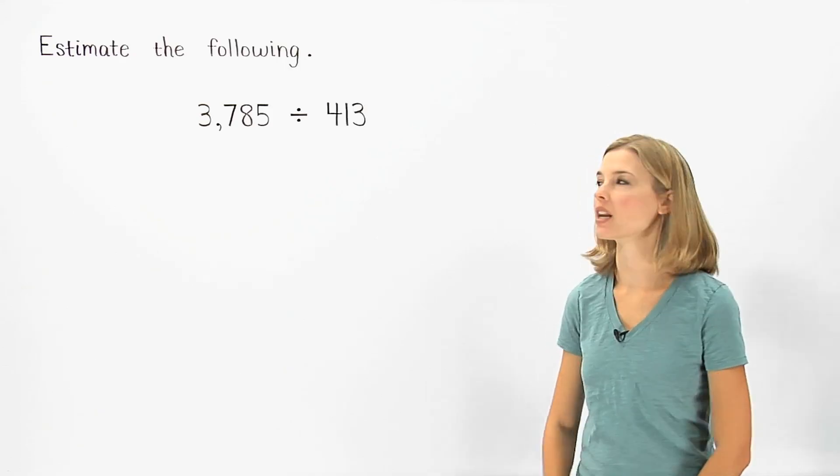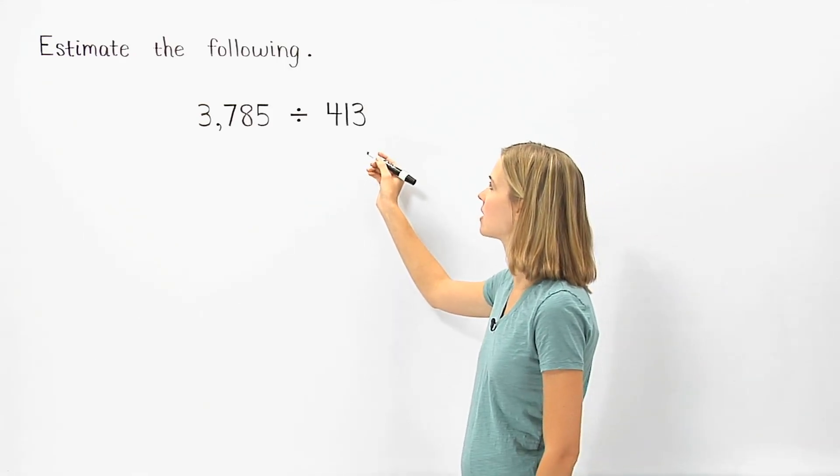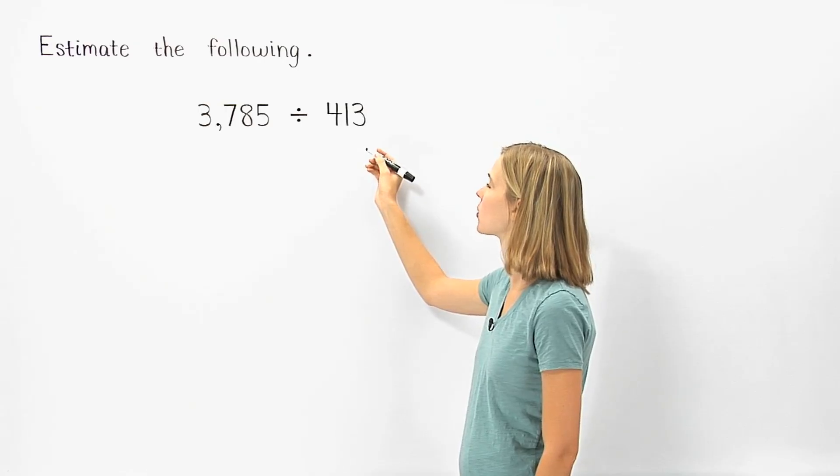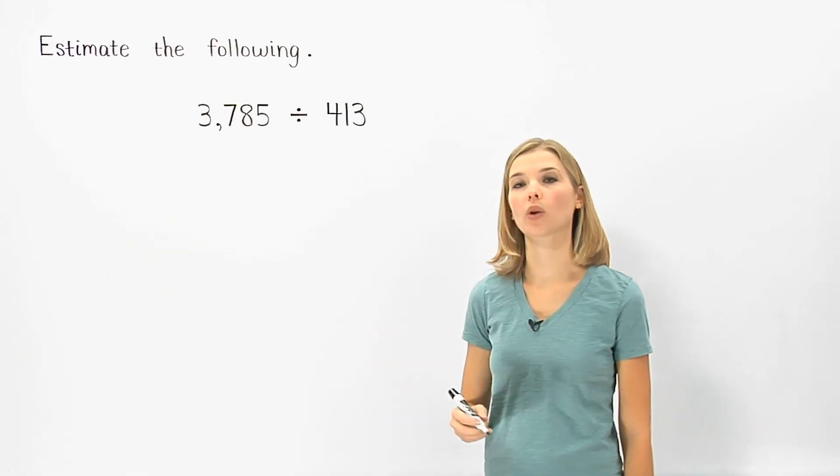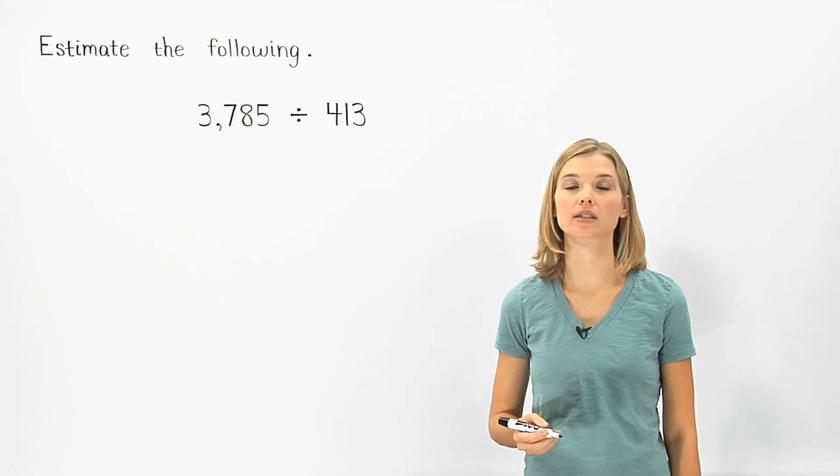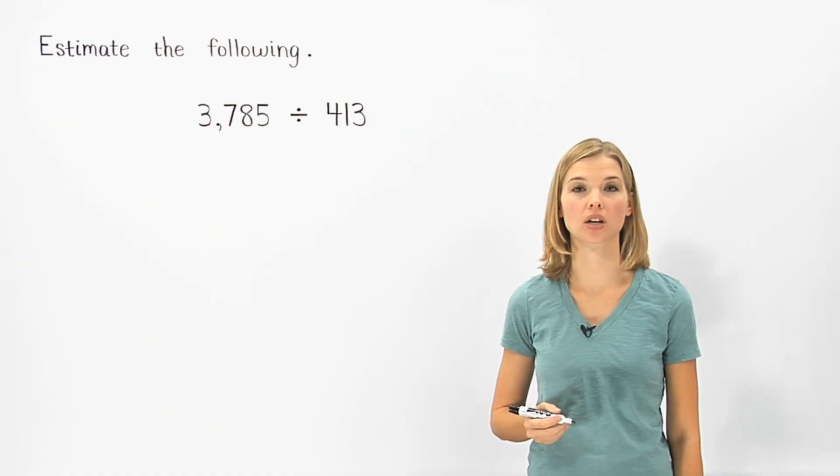To estimate the quotient of 3,785 divided by 413, we first round so that each number contains only one non-zero digit.